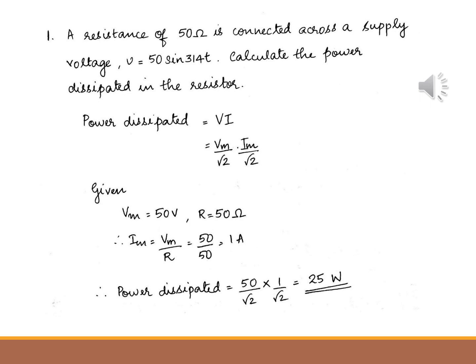The equation for power dissipated is VI, or I squared R, where VI represents Vrms into Irms. We know only the maximum values of voltage and current, so converting to RMS: V equals Vm by root 2 and I equals Im by root 2. Substituting the values of Vm and Im, we get the power dissipated to be 25 watts.